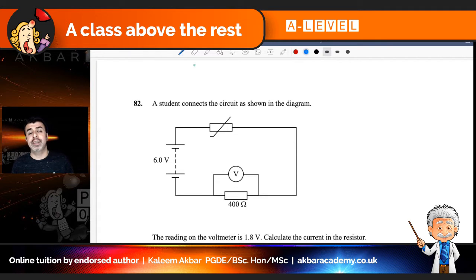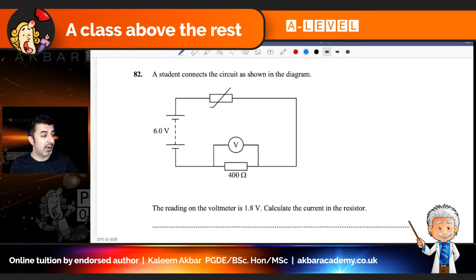A student connects the circuit as shown in the diagram. So what we've got in this diagram is a battery on the left-hand side of six volts. We have a thermistor along the top and we have a fixed resistor along the bottom with a voltmeter in parallel. And the very first part of the question says the reading on the voltmeter, which is across the fixed resistor, is 1.8 volts. Calculate the current in the resistor.